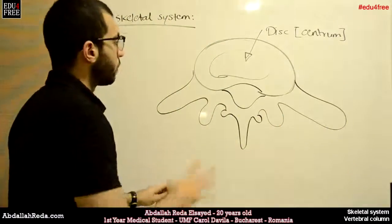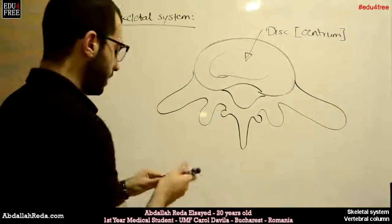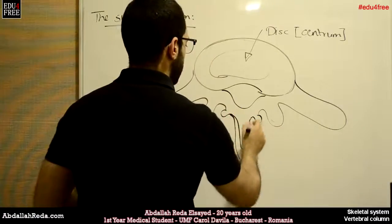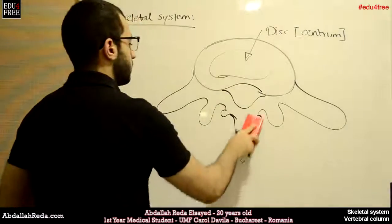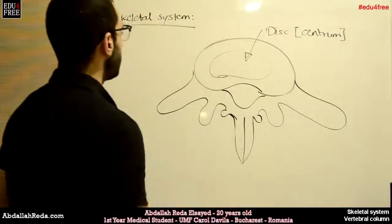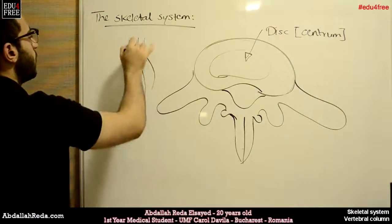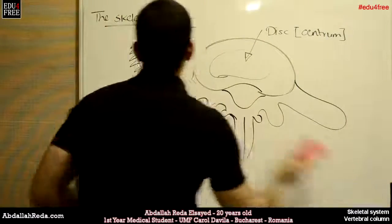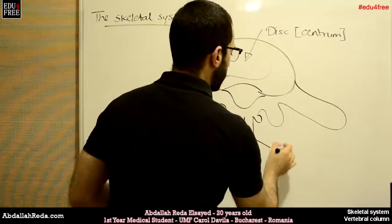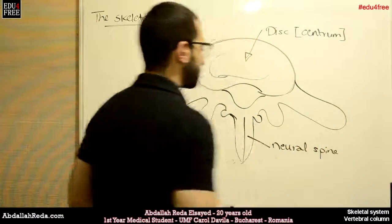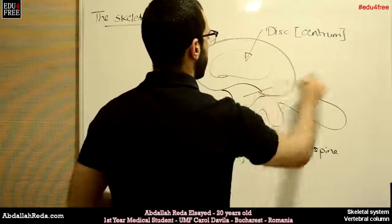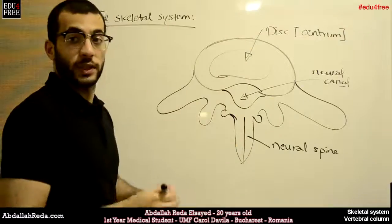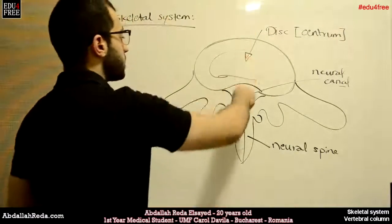Looking at the vertebra from a posterior view, there is a spine that protrudes from the back. This spine is called the neural spine, and the canal here is called the neural canal. It is called the neural canal because a neural structure — the spinal cord — passes through this canal.